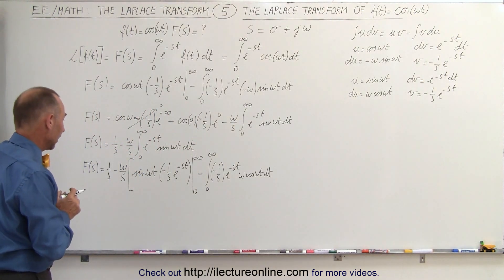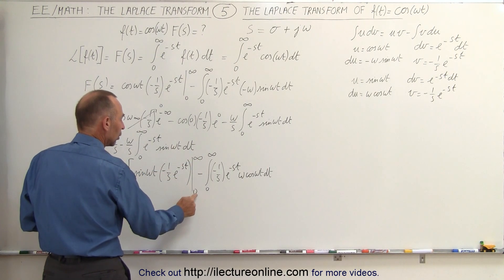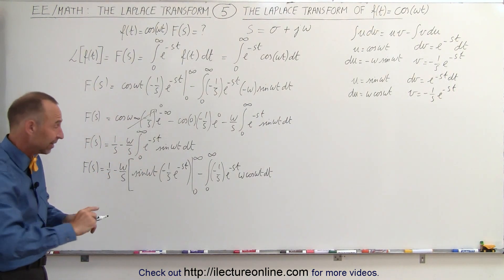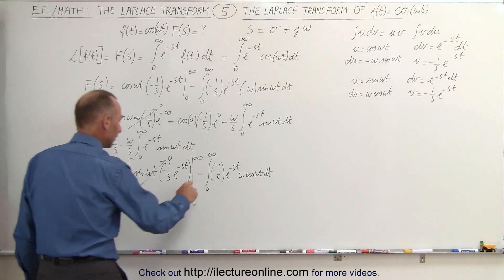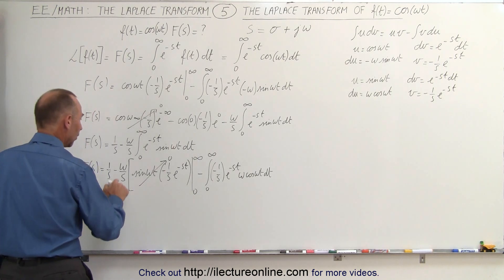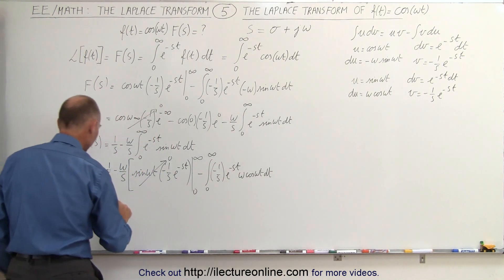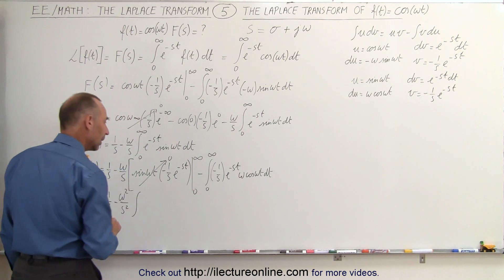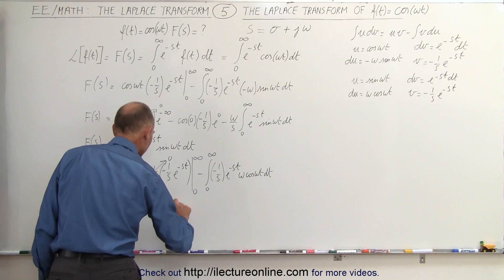It seems like a mess, but we're almost there. When we plug in the upper limit we get e^(−∞), which is 0. When we plug in the lower limit, sin(0) is 0. So both the upper and lower limit give 0, and this whole portion goes to 0. Then with three minus signs that gives a net minus, so we end up with F(s) = 1/s minus (ω/s)·(ω/s), which becomes (ω²/s²) times the integral of e^(−st)·cos(ωt) dt.